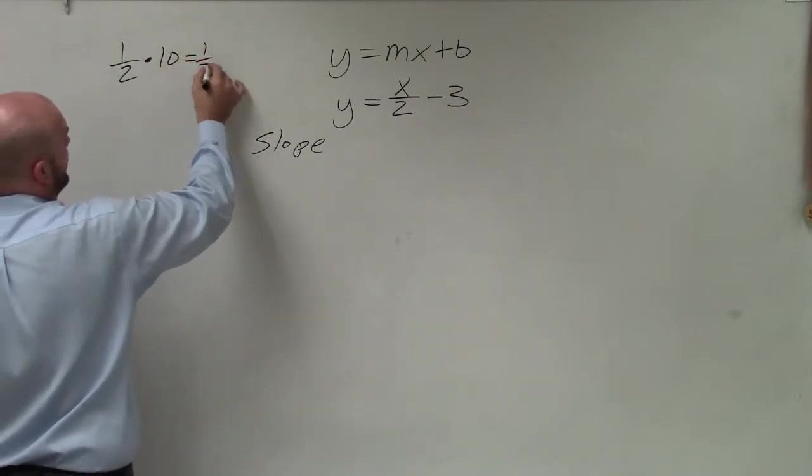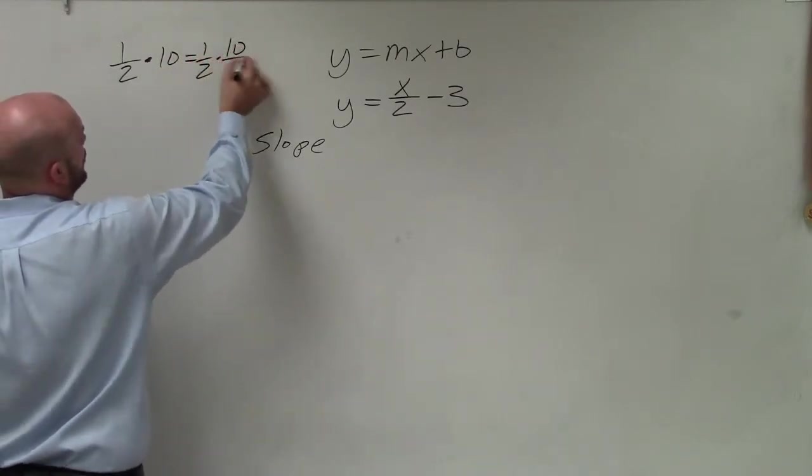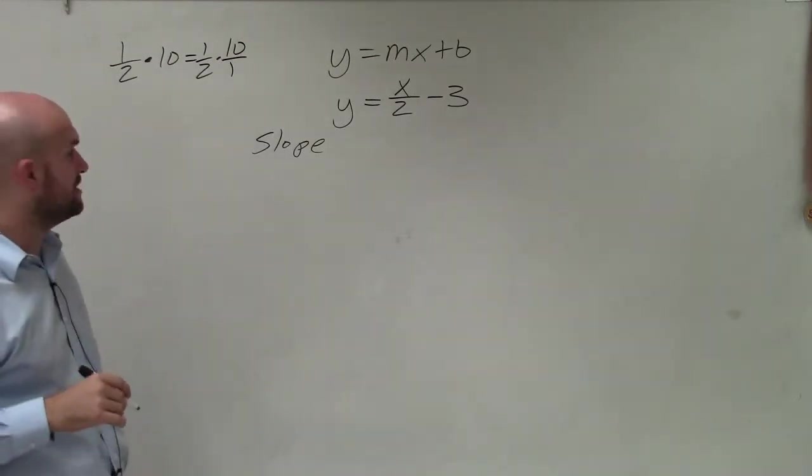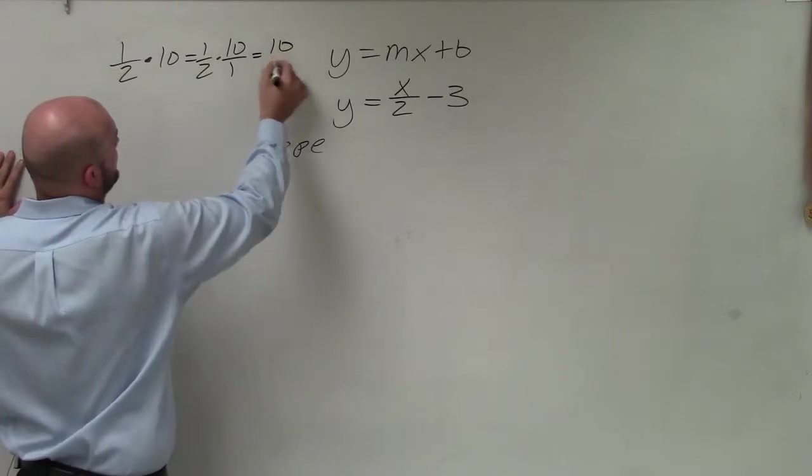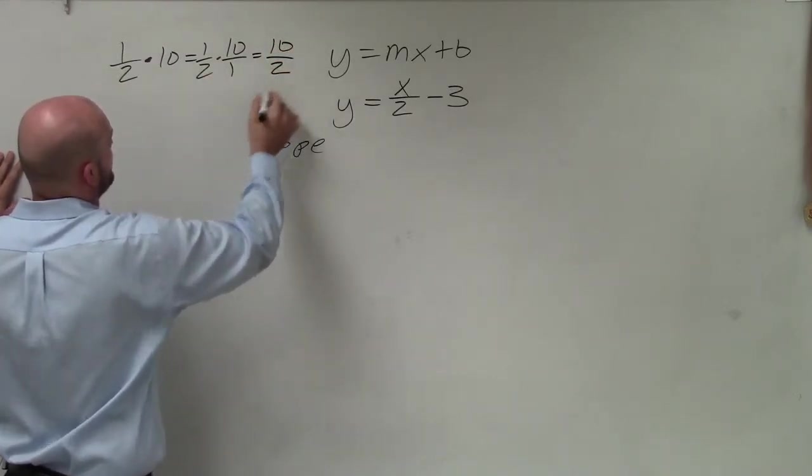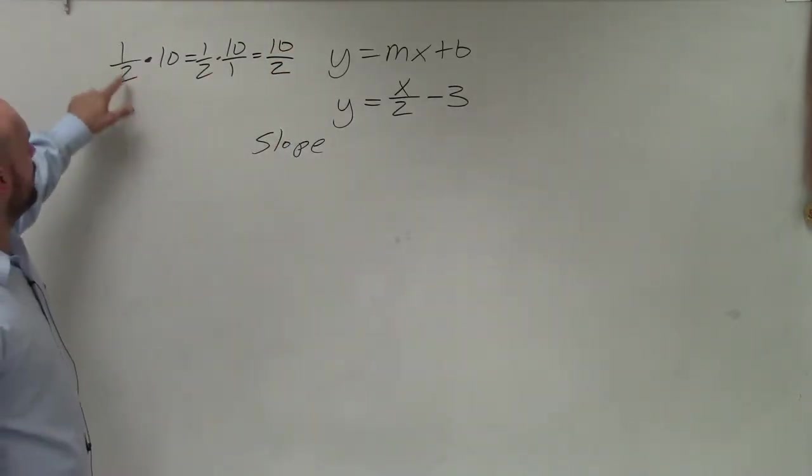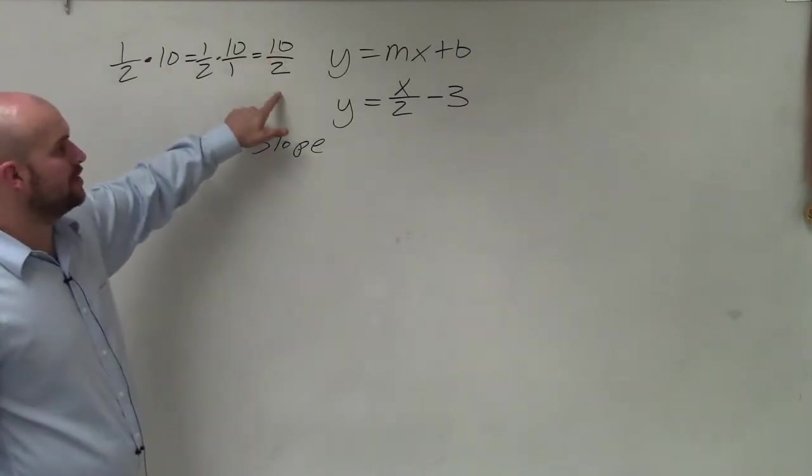Well, basically we can rewrite that as 1 half times 10 over 1, right? Because any whole number can be rewritten as a fraction, which can be simplified as 10 times 1 is 10 divided by 2 times 1 is 2. So basically, I can rewrite 1 half times 10 as 10 over 2.